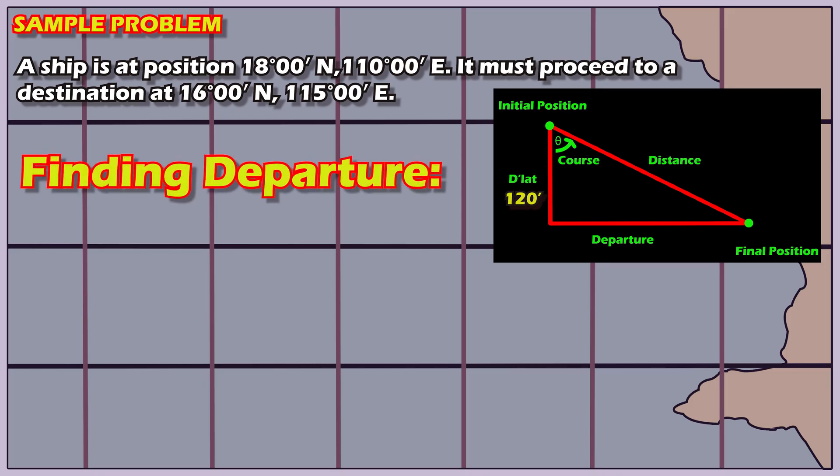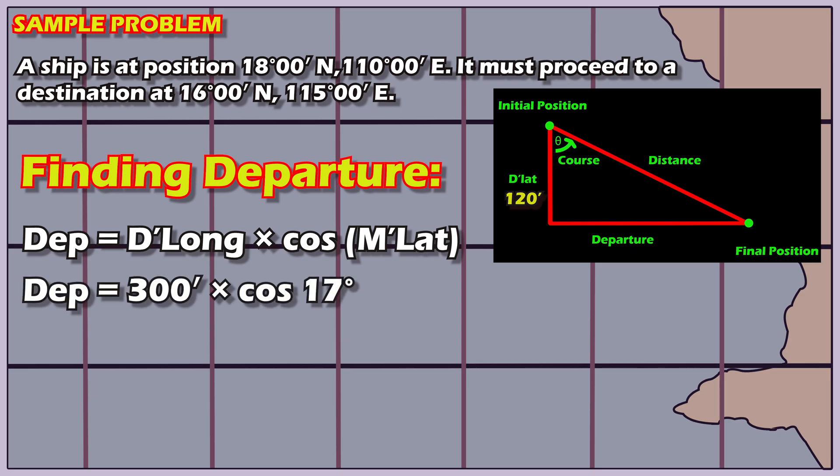Finding the departure. The formula for departure is difference of longitude multiplied by the cosine of the mid-latitude. That's 300 nautical miles multiplied by the cosine of 17 degrees. This gives us 286.89 nautical miles. Now that we have the departure, our triangle is updated.